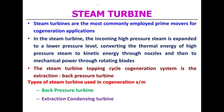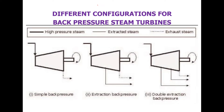The two types of steam turbines used in cogeneration are the backpressure turbine and the extraction condensing turbine. Here, the different configurations for backpressure steam turbines are shown.